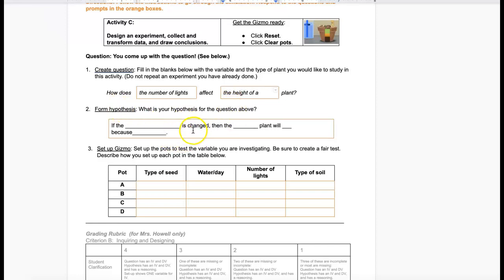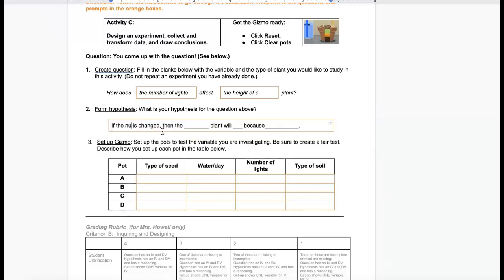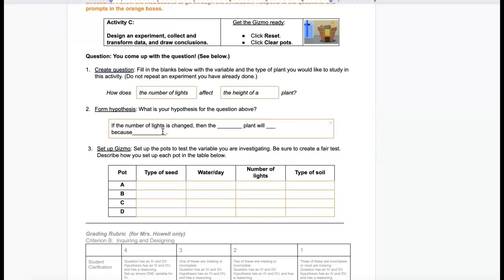And then form a hypothesis. Here's a sentence stem that you can use. If the number of lights is changed to zero lights, then the height of the plant will be short.